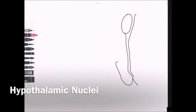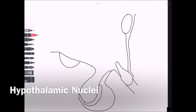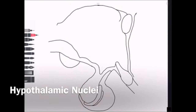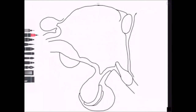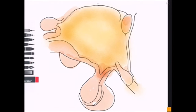Welcome to another Soton Brain Hub video. This one covers the hypothalamus, which is located either side of the third ventricle. It's relatively small when considering its vast functional importance, but it's related to physiological functions and limbic functions.